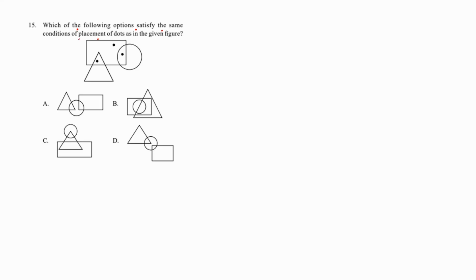Which of the following conditions satisfy the same placement of dots as in the given figure? This is a dot situation question. The first dot is overlapping triangle and rectangle, the second dot is just in rectangle, and the third dot is in rectangle plus circle. We need these three situations. Option B satisfies all three conditions: triangle and rectangle overlapping, rectangle and circle overlapping, and only rectangle.